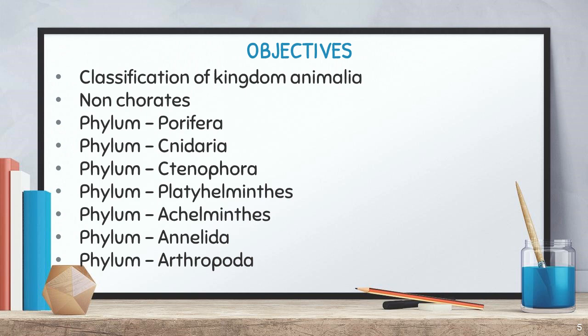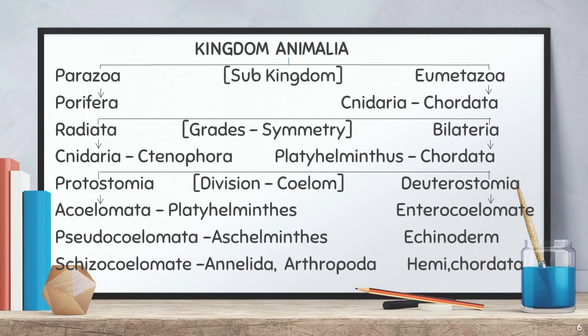Today we are going to discuss the first seven phyla, which belong to non-chordates. Non-chordates means there is no notochord in these organisms — they are also called invertebrates. Let us look into them one by one.